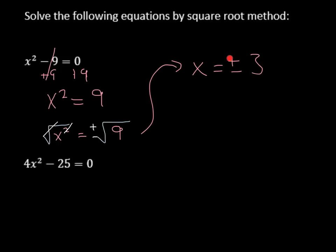Now, what does this plus or minus mean? It's really important to recognize that this is two different solutions. So we're going to have x is equal to 3, and then I'm going to use a comma, and then it's also negative 3.